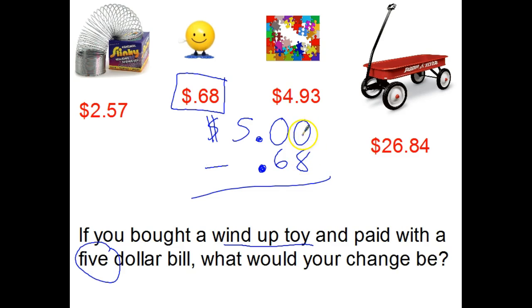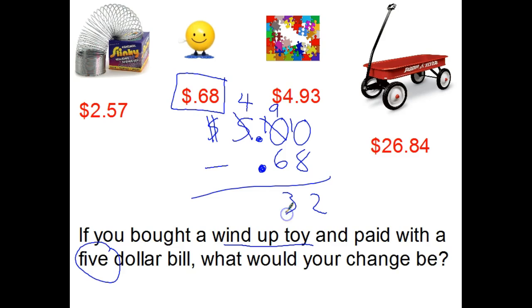$0 minus $8, I can't do, so the $0 comes over to borrow from his neighbor. The neighbor doesn't have anything, but goes to borrow from the next neighbor. So the $5 becomes $4, $0 becomes $10. Now the ones place borrows from the $10, making it $9, and the ones place becomes $10. $10 minus $8 is $2, $9 minus $6 is $3, $4 minus $0 is $4. Make sure you get that decimal point lined up in there just like buttons on the shirt.